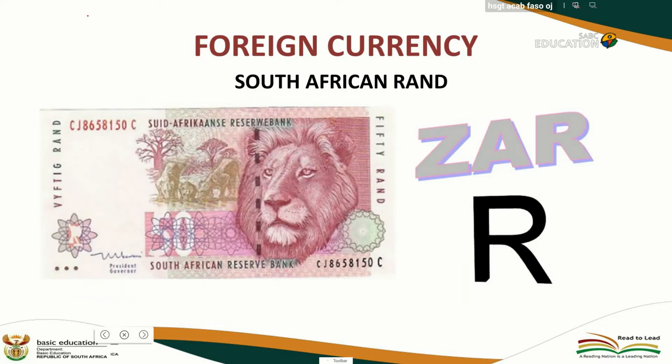The South African Rand has the symbol R and the currency code is ZAR for Zuid-Afrika Rand.